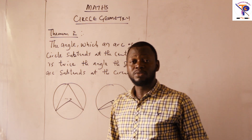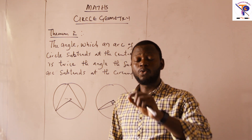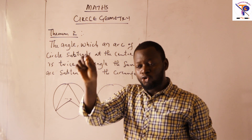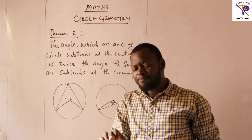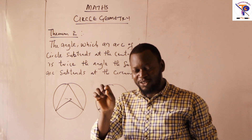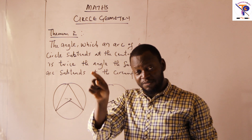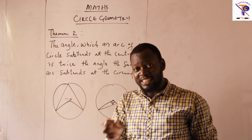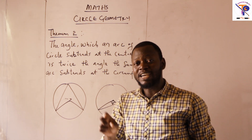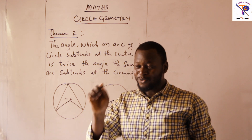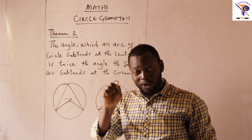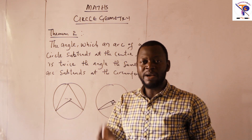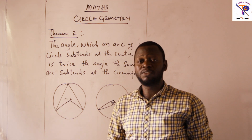I told you last time about the first theorem we discussed: when you have a line that runs from the center of the circle to meet a chord, if you have a 90-degree angle at that point — that is, if the line is perpendicular — then the line is at the same time a bisector of that chord. So the line from the center to the chord, if perpendicular, is definitely a perpendicular bisector. We had a few examples and classwork was given.